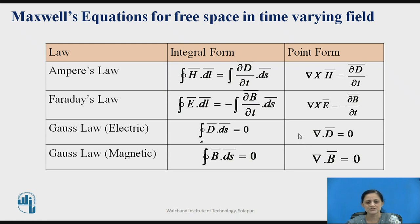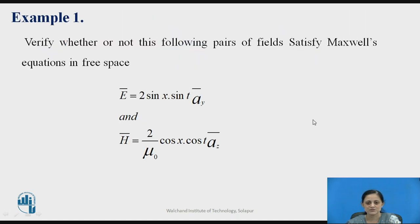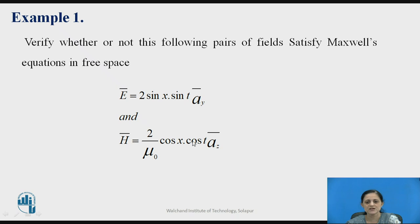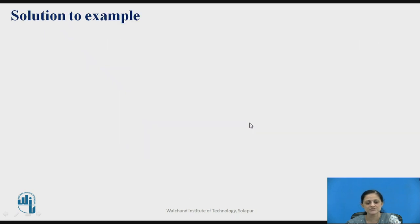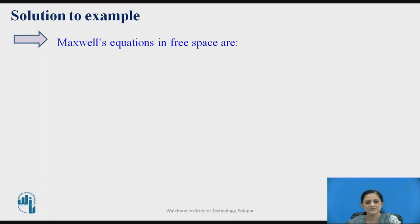Now let us check one example: verify whether or not the following pair of fields satisfies Maxwell's equations in free space. The medium given is free space, and two equations are given — electric field intensity Ē and magnetic field intensity H̄. Ē is given as 2sin(x)sin(t) āy and H̄ is (2/μ₀)cos(x)cos(t) āz. You have to take reference of each Maxwell equation and solve for the LHS and RHS.